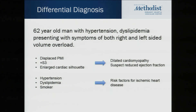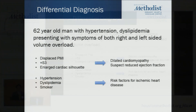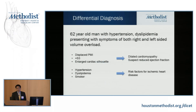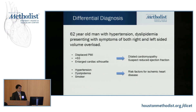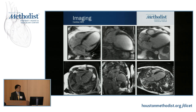Now based on history, physical exam, and echocardiogram confirming heart failure with reduced ejection fraction, what may have caused this? He has risk factors of hypertension, dyslipidemia, smoking, and a father with heart disease—possibly a premature MI. So he has risk factors for ischemic heart disease. Based on the guidelines, one of the things you could do is perform an ischemia evaluation to see if that's what is causing heart failure.